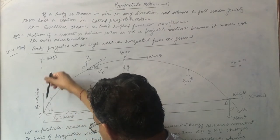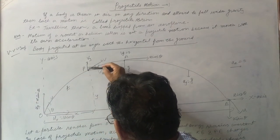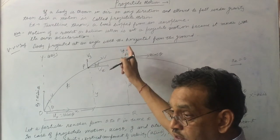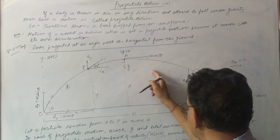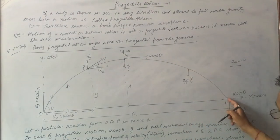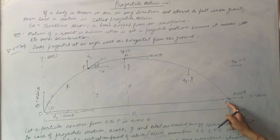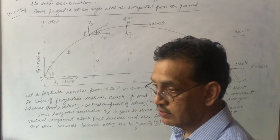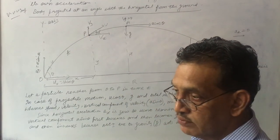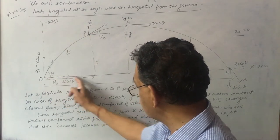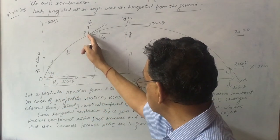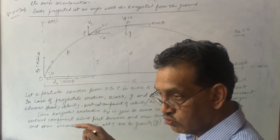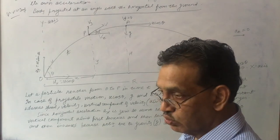Horizontal velocity remains the same everywhere because vertical velocity decreases going up. This particle takes time t to reach from O to P. Projectile motion is two-dimensional — the body has both x-movement and y-movement. So we write separate x and y equations.